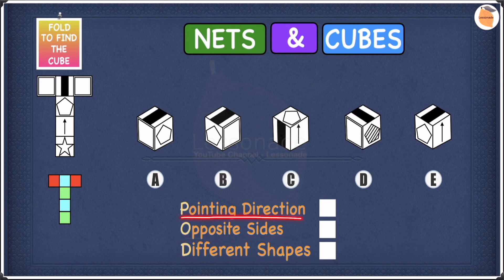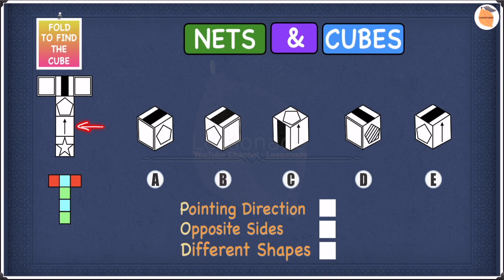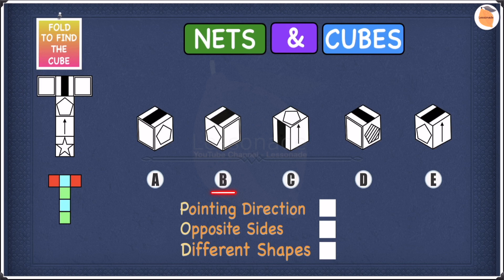Let's start with pointing directions. Looking at the net, we have an arrow and this arrow is pointing towards the pentagon. So if we find an option where the arrow is not pointing towards the pentagon, we cross it off. In A there is no arrow, so leave A. In B there is no arrow, so leave B. In C we do have an arrow pointing towards the pentagon, so that's fine. In D there is no arrow, so leave D. In E we do have an arrow but it's pointing towards the stripe and not the pentagon, so we cross off E.